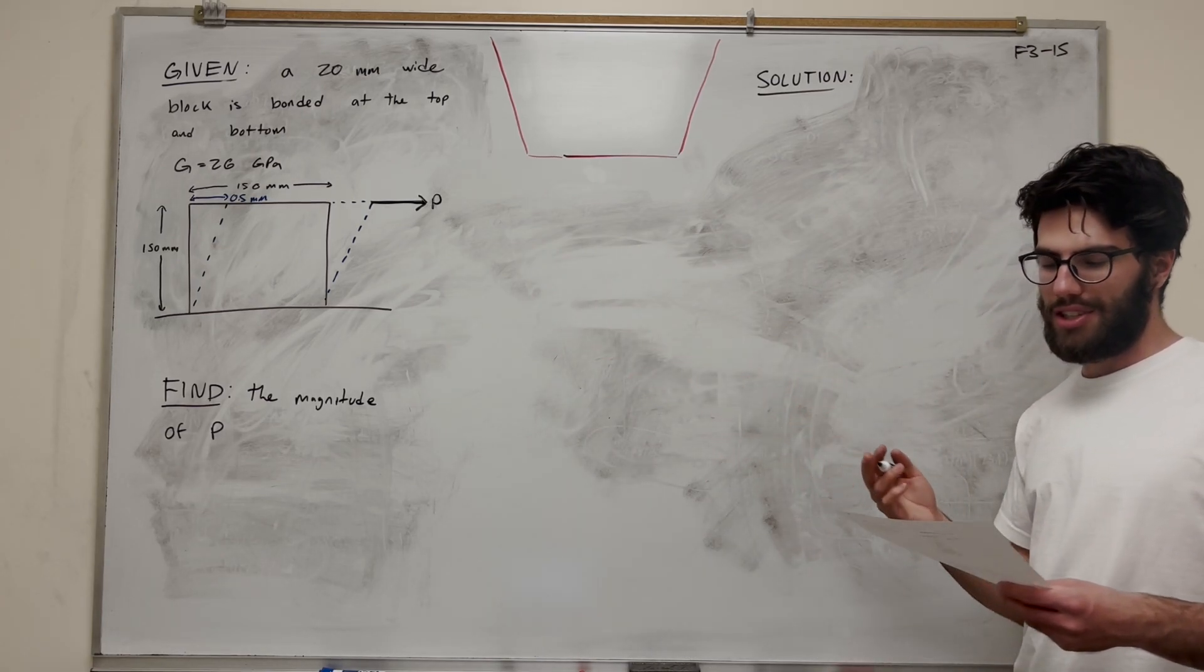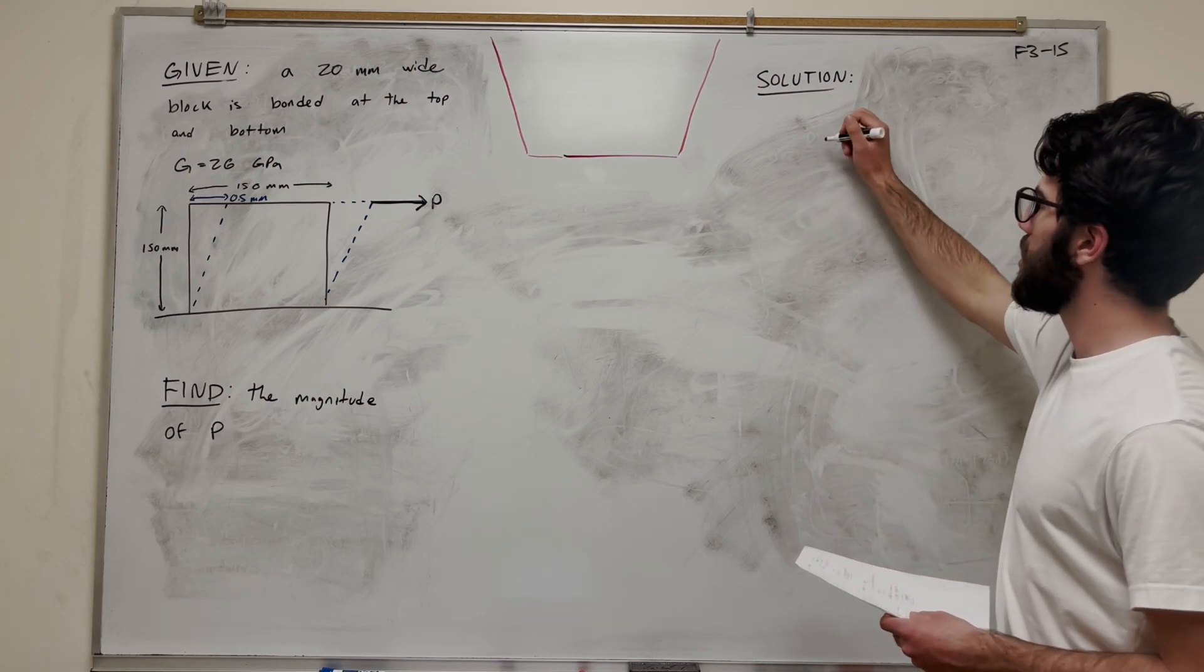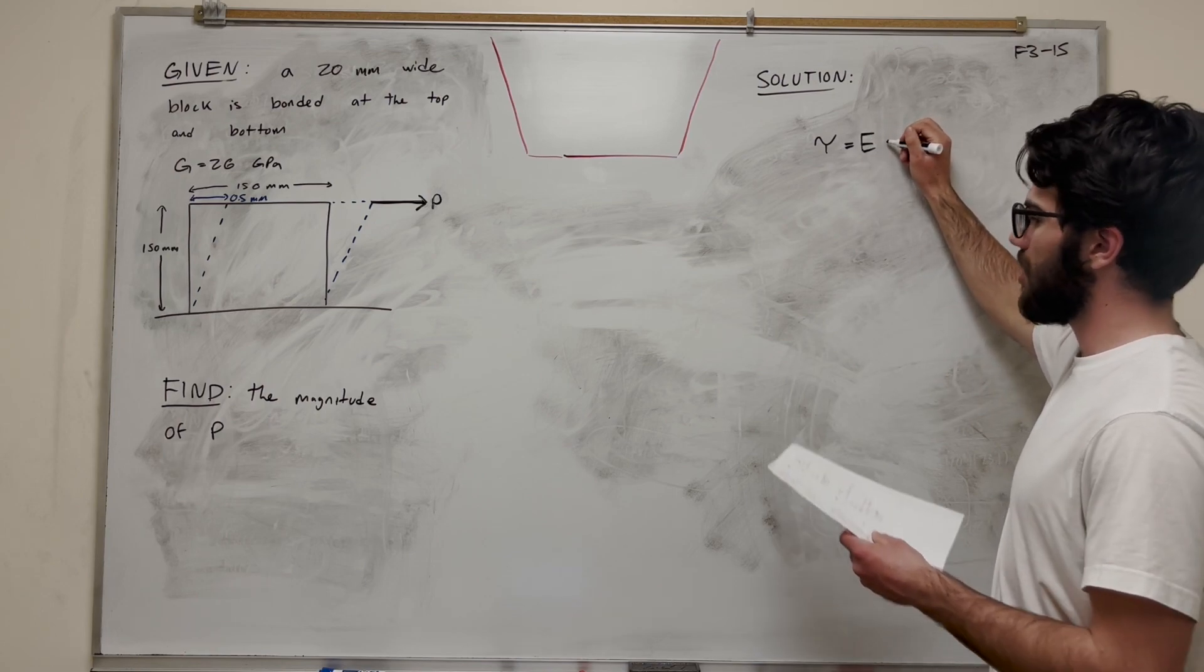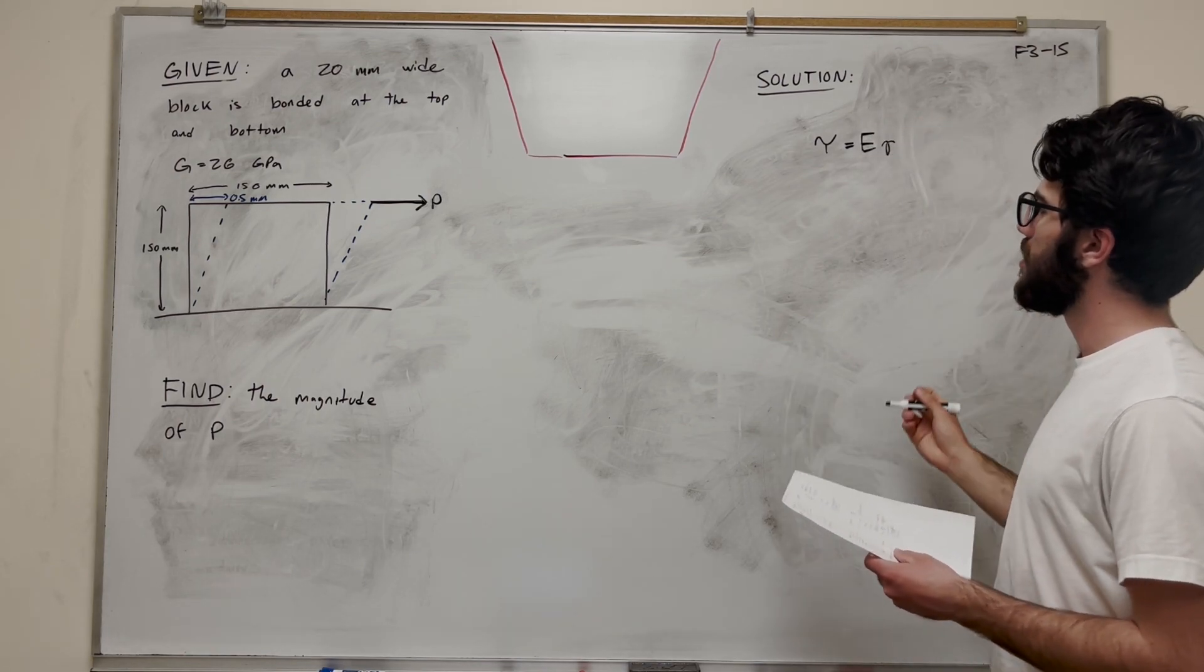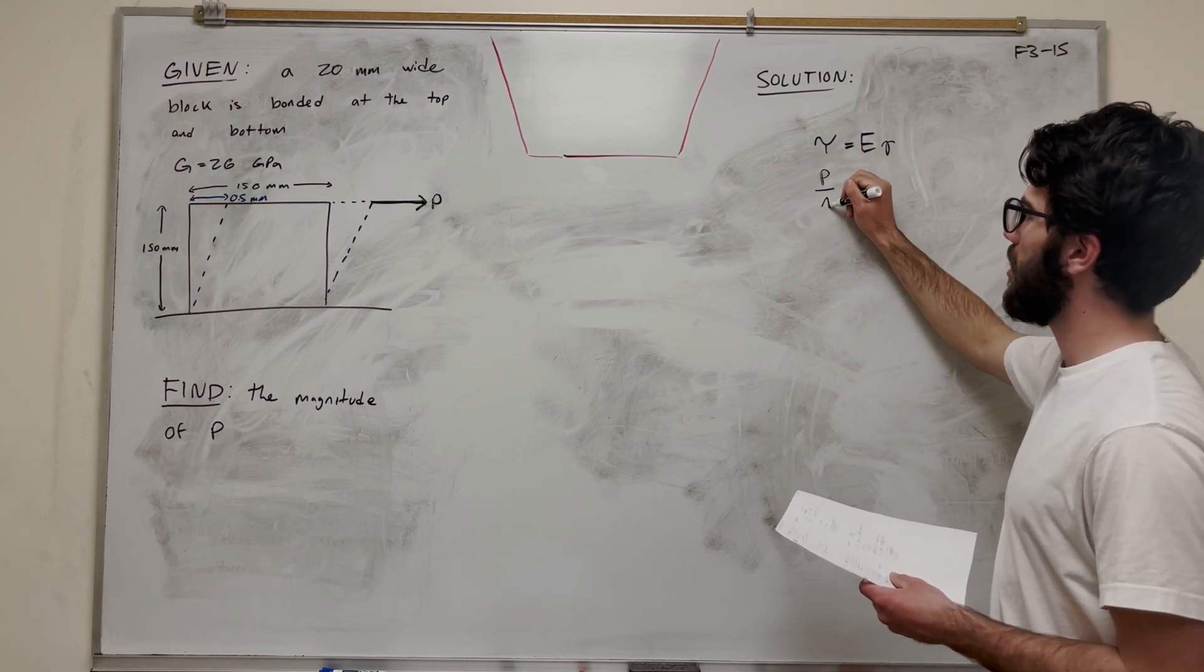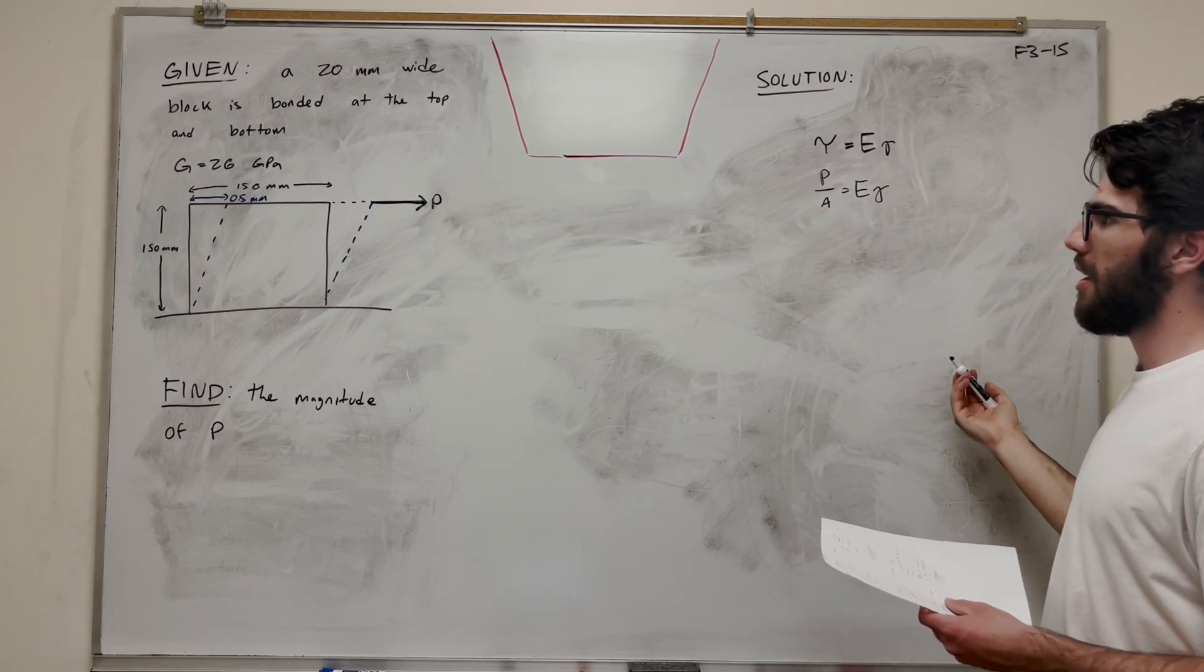Let's map out the end of this problem before we solve the beginning. We know the equation: shear stress equals the shear modulus of elasticity times shear strain. And shear stress equals P over area. So we can keep writing it like that.